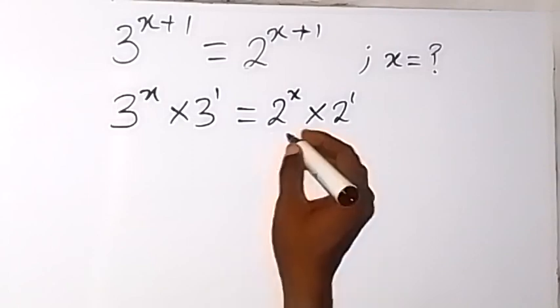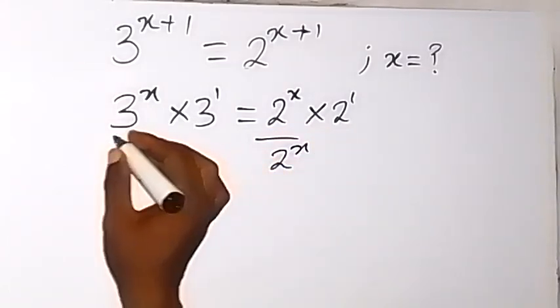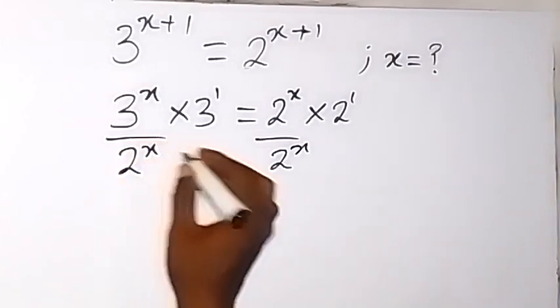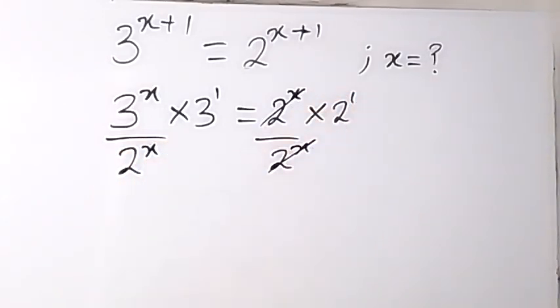That is, I can divide this side by 2 raised to power x and also divide this side by 2 raised to power x so that 2 raised to power x cancels on this side.